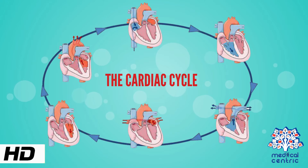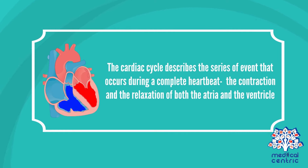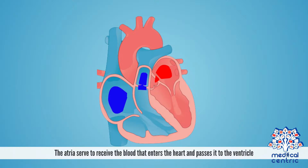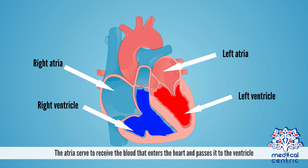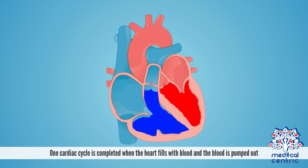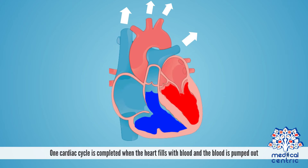Today's topic is the cardiac cycle. The cardiac cycle describes the series of events that occurs during a complete heartbeat — the contraction and the relaxation of both the atria and the ventricle. The atria serve to receive the blood that enters the heart and pass it to the ventricle. One cardiac cycle is completed when the heart fills with blood and the blood is pumped out.